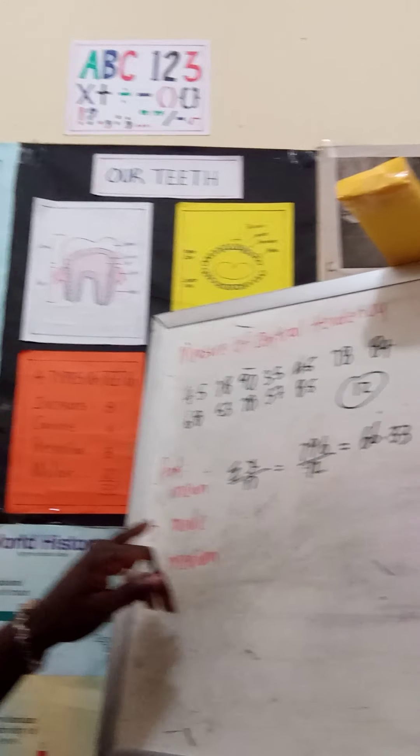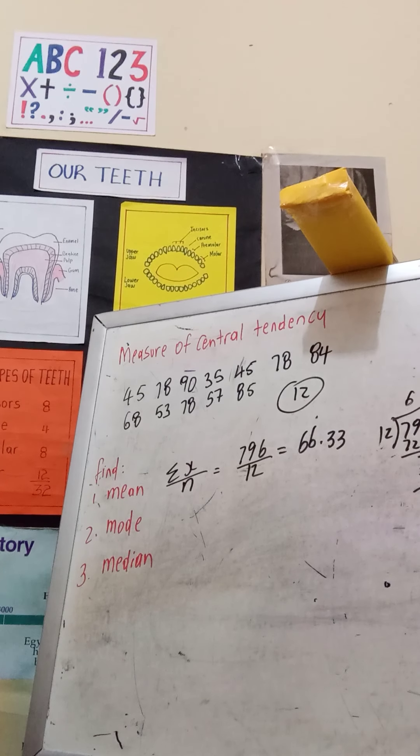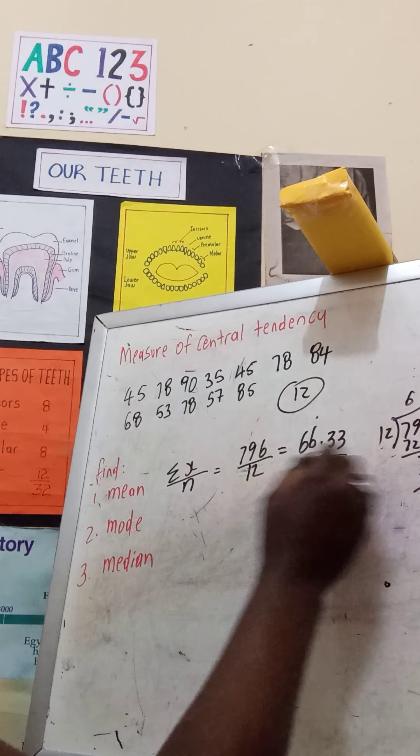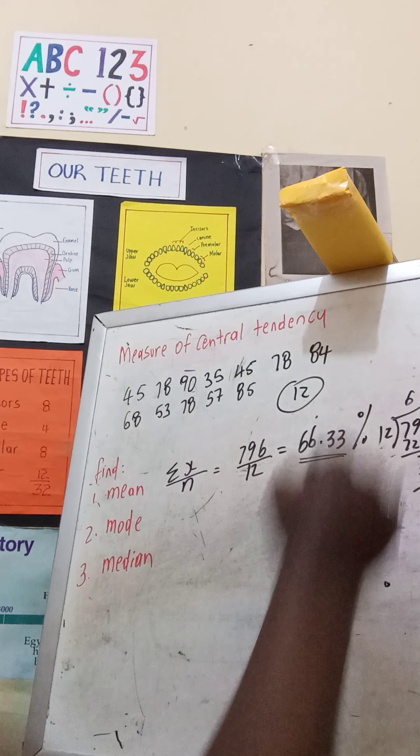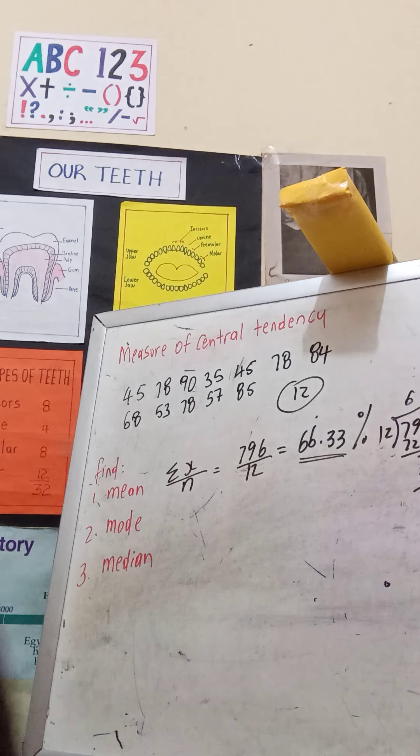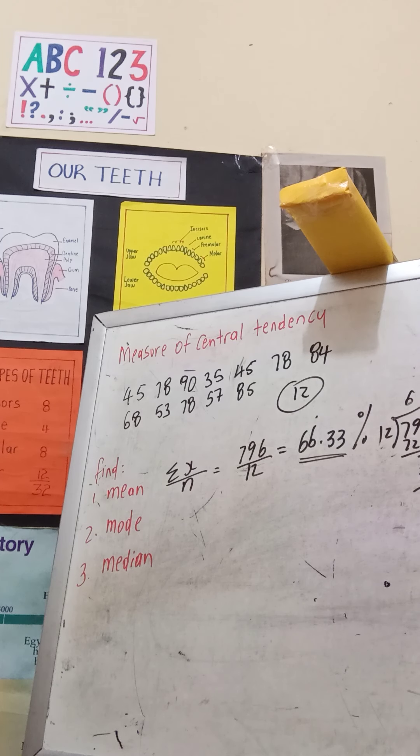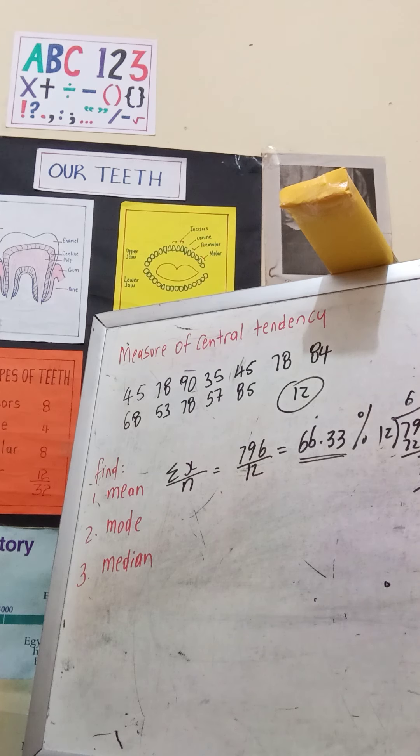Our mean score here is 66.3, so 66.3 percent would be the mean score in your class. Of your 12 students, the mean is 66.3.